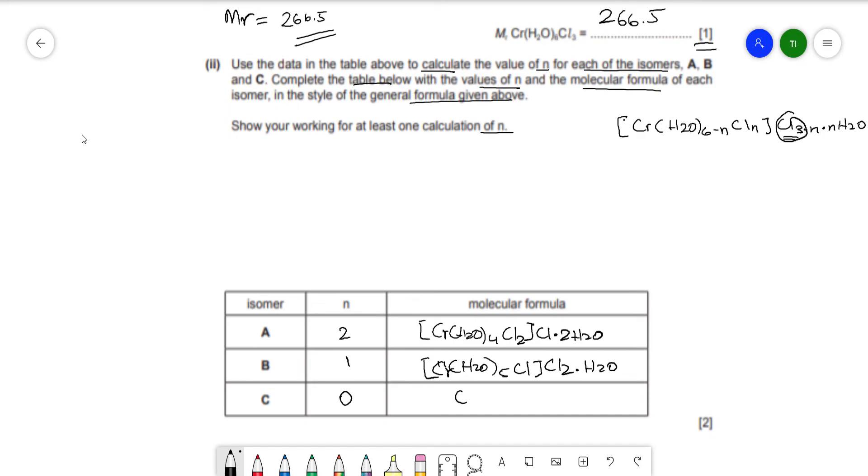And the last one is pretty simple. [Cr(H2O)6]Cl3. So that'd be 6 minus 0, that's 6 for H2O, and ClN, so that'd be 0, and Cl3, and H2O, so 0.